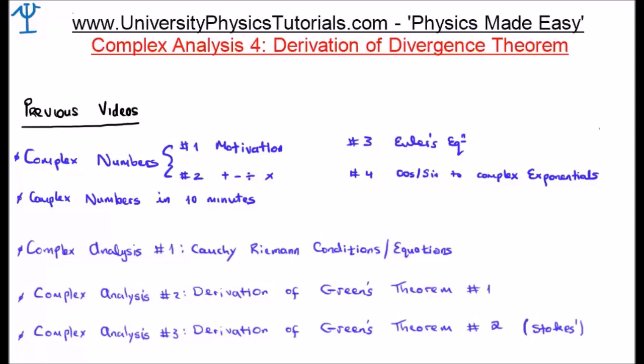Before we continue, it's useful to look at the previous videos to this one. We are obviously discussing complex analysis, and my videos on complex numbers are very applicable. In video number 1 on my series on complex analysis, I discussed the Cauchy-Riemann equations. In videos number 2 and 3, I presented two different derivations of Green's theorem. I noted that Green's theorem is related to the divergence theorem, and after deriving the divergence theorem in this current video, I will show the relationship between Green's theorem and the divergence theorem.